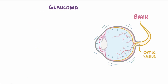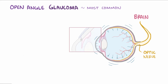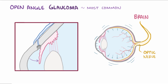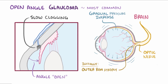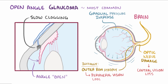In open angle glaucoma, the most common type, the angle between the cornea and the iris is open, but the drainage system slowly gets clogged over time, causing a gradual increase in pressure on the optic nerve. This initially results in atrophy of the outer rim of the nerve and a decrease in peripheral vision. As pressure increases further, continued damage to the optic nerve eventually leads to loss of central vision as well.